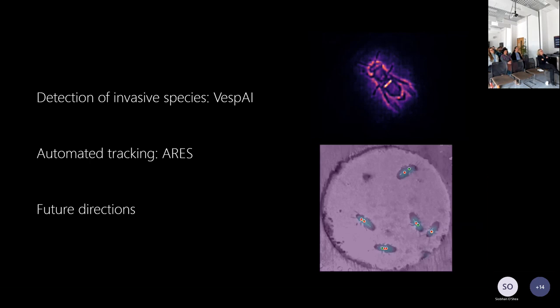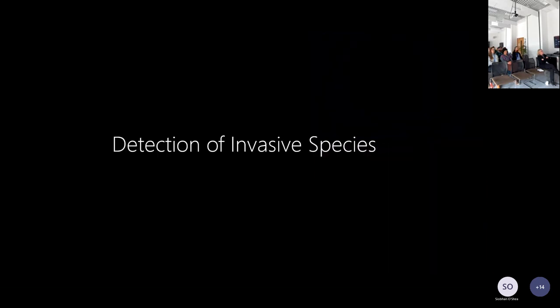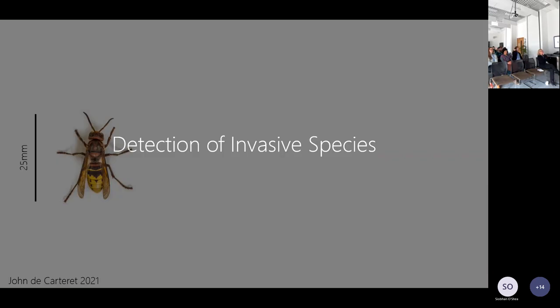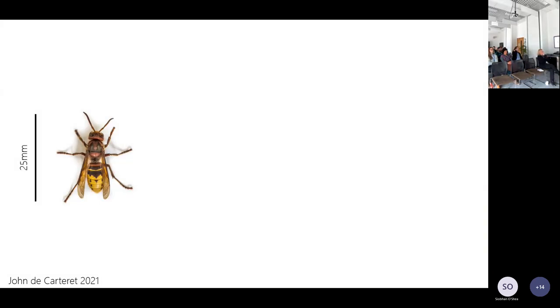First, invasive species — let's talk about invasive hornets. This is the European hornet, which many of you may be familiar with. But there is also an invasive hornet spreading through Europe called Vespa velutina, commonly known as the Asian hornet. That gets quite confusing because most hornets are native to Asia, and the biggest confusion comes with the giant Japanese hornet which is a different invasive Asian hornet in the US. We're talking about Vespa velutina, the middle one.